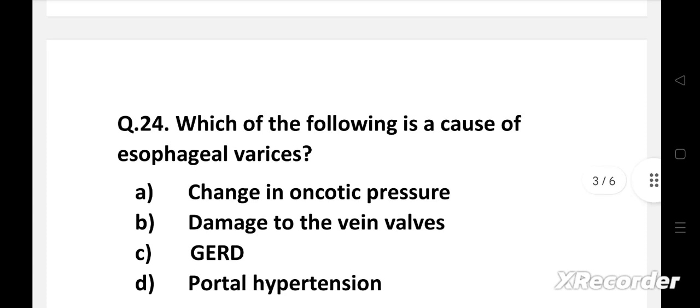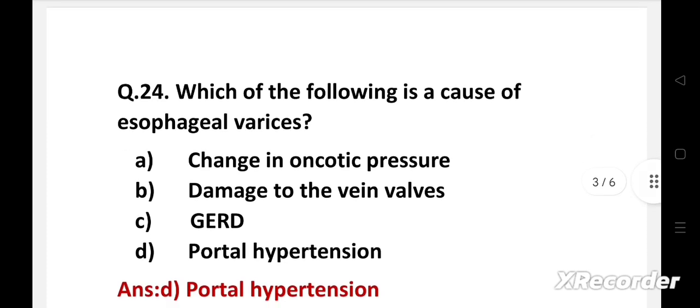Right answer is option D, portal hypertension. Esophageal varices are swollen veins in the lining of esophagus. Esophageal varices occur in people with portal hypertension. Abnormal pressure causes thin esophageal veins to swell and enlarge. Bleeding is the most serious risk of esophageal varices.